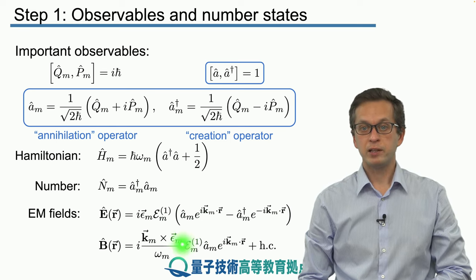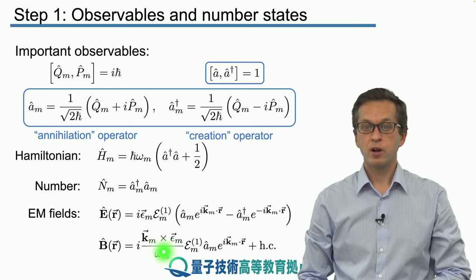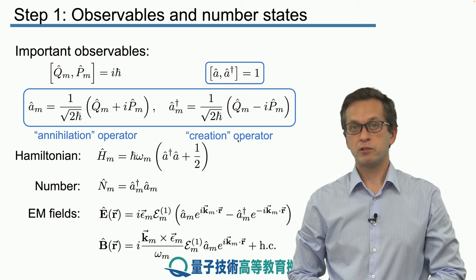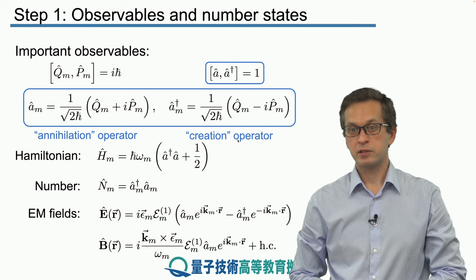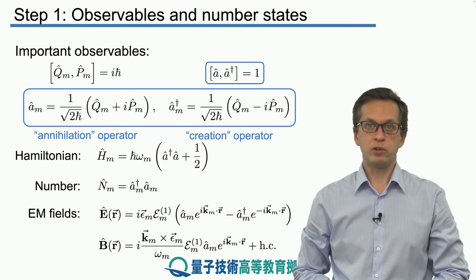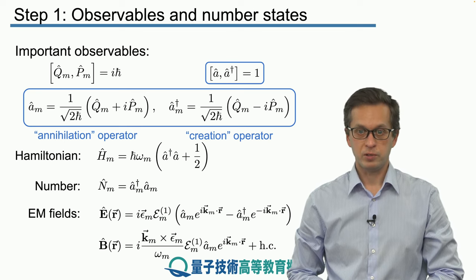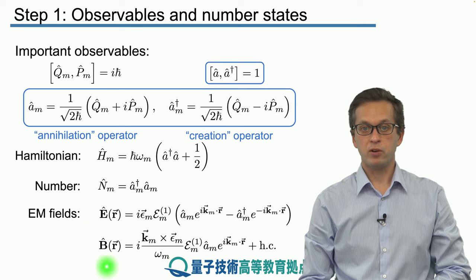For completeness, we write the form of the magnetic field using the creation and annihilation operators, although we won't use it in the remainder of this module. We're going to concentrate on E.